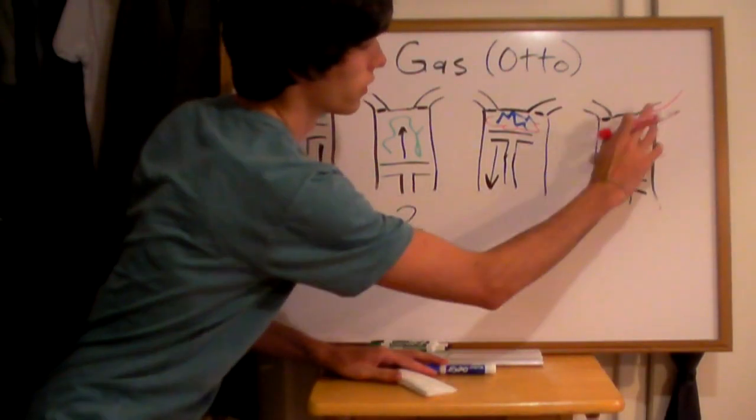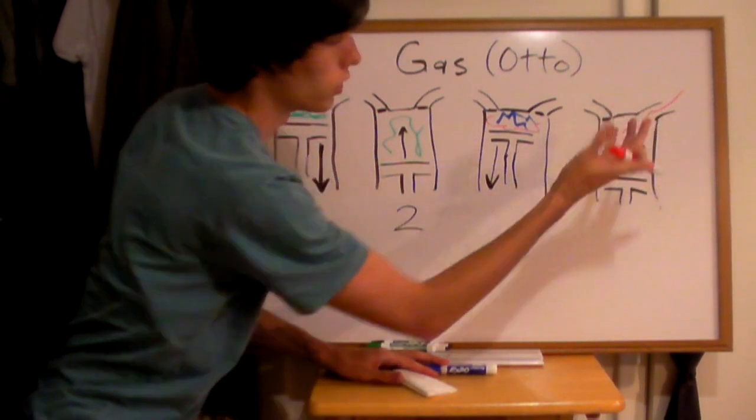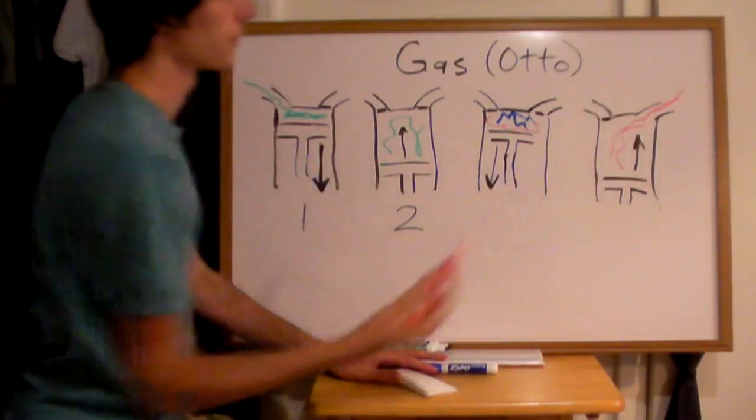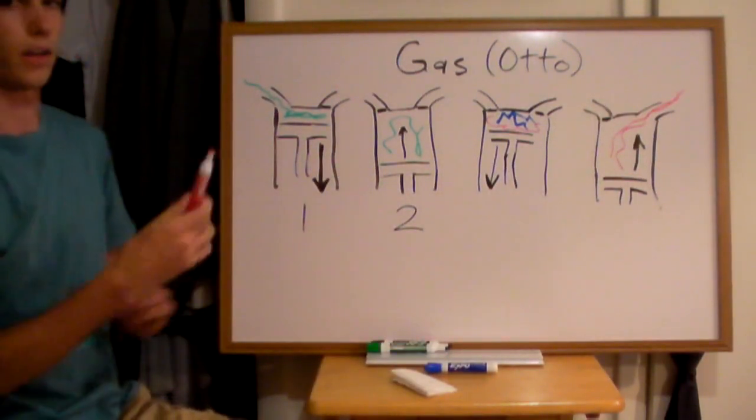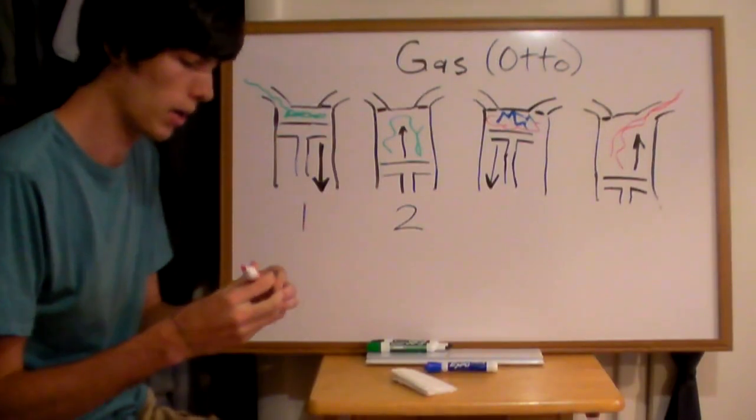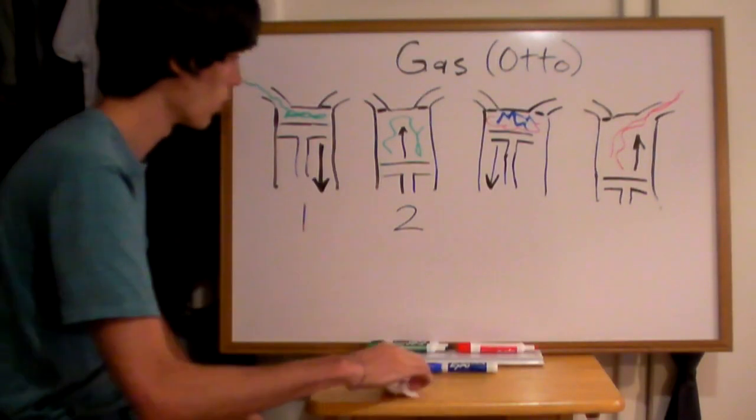So the last step then is to get those exhaust fumes out. So those exhaust valves here, there's usually two of them, are going to open up and then your exhaust airs can go out. And then the cycle repeats itself. Now it's a little different with a diesel engine. In my opinion it's also a little more practical.